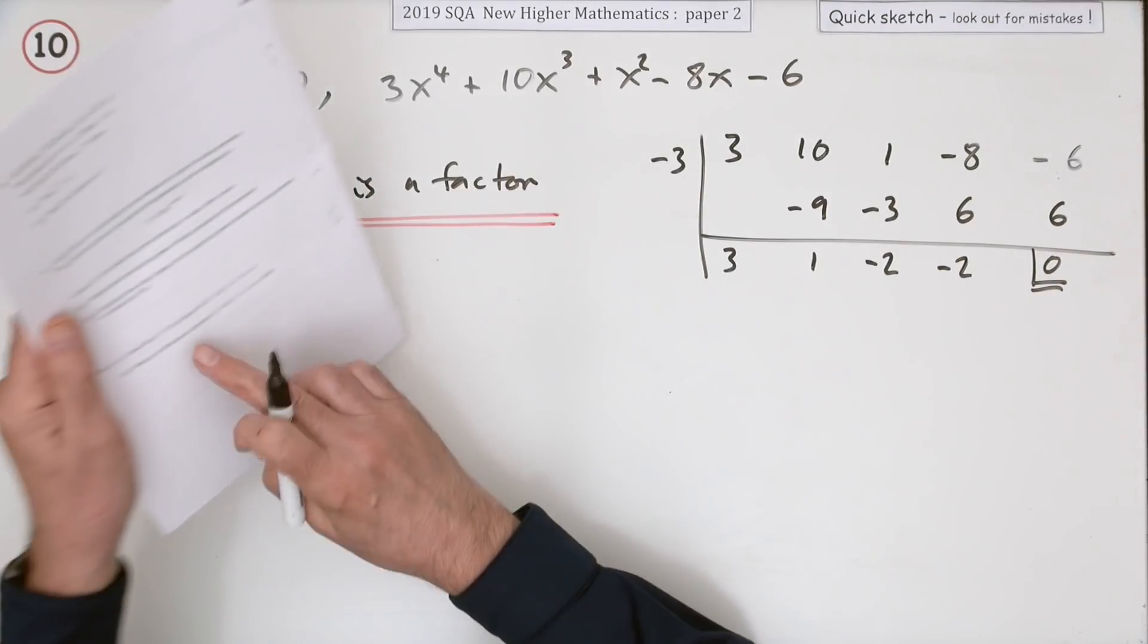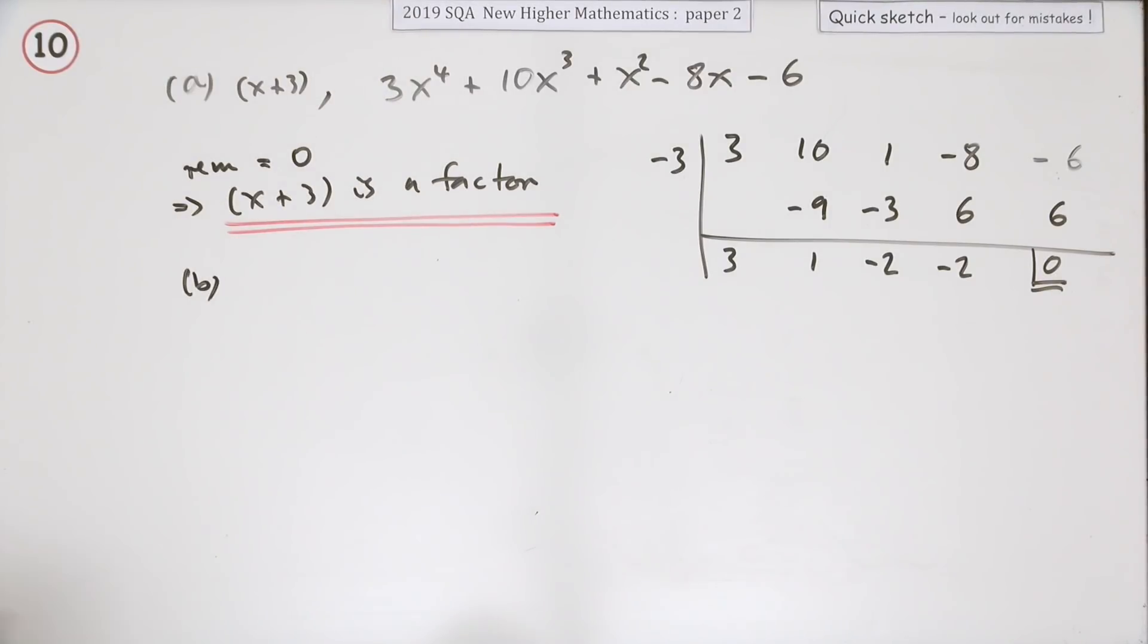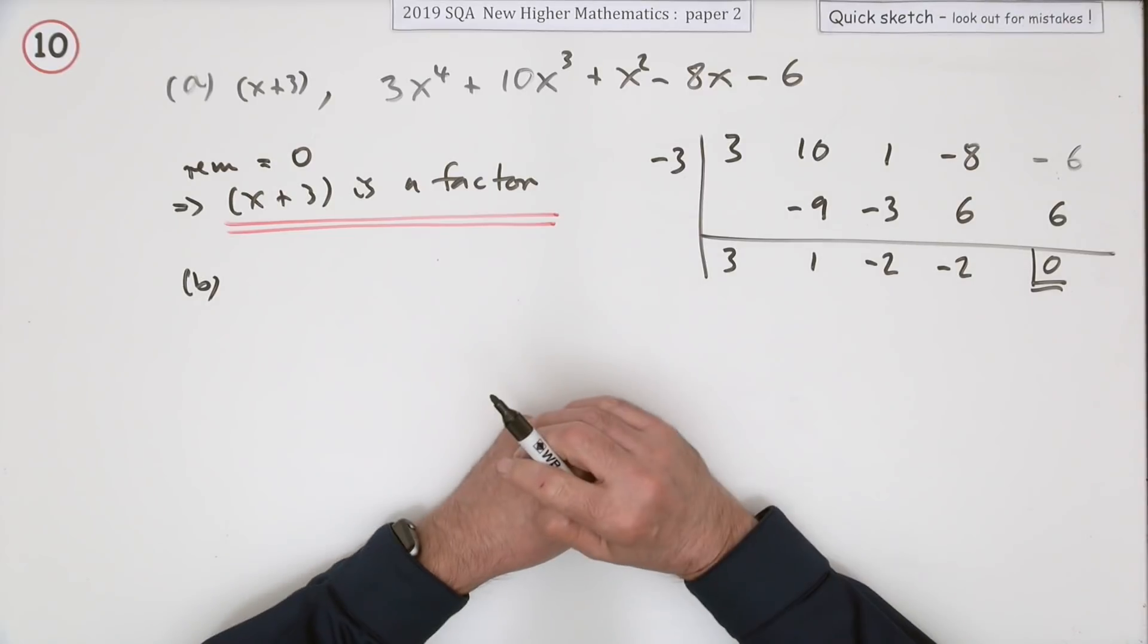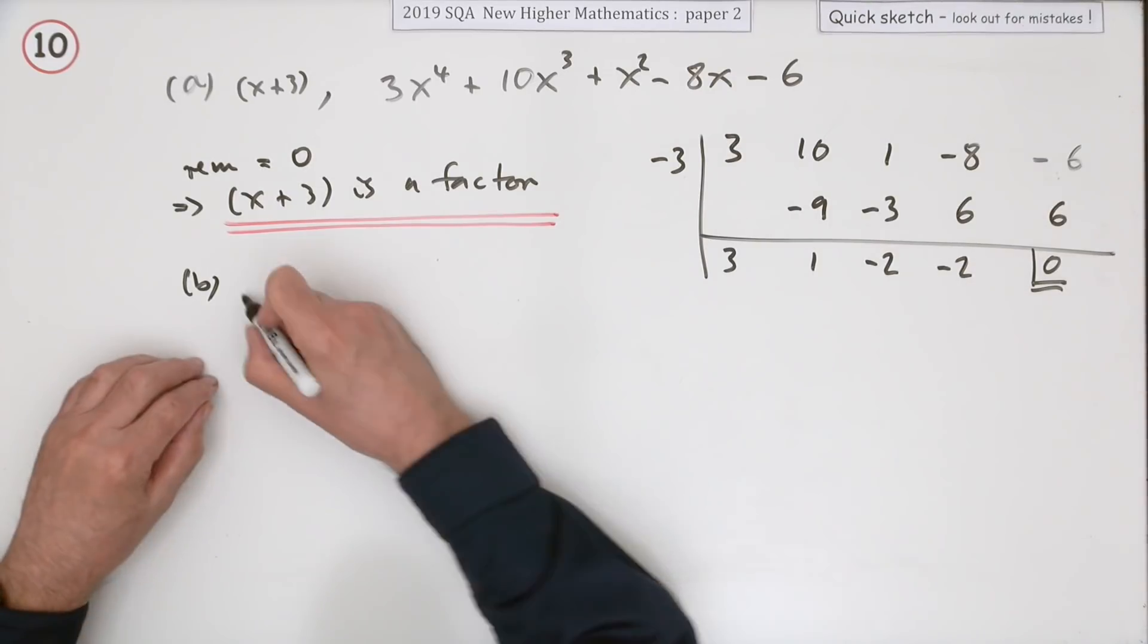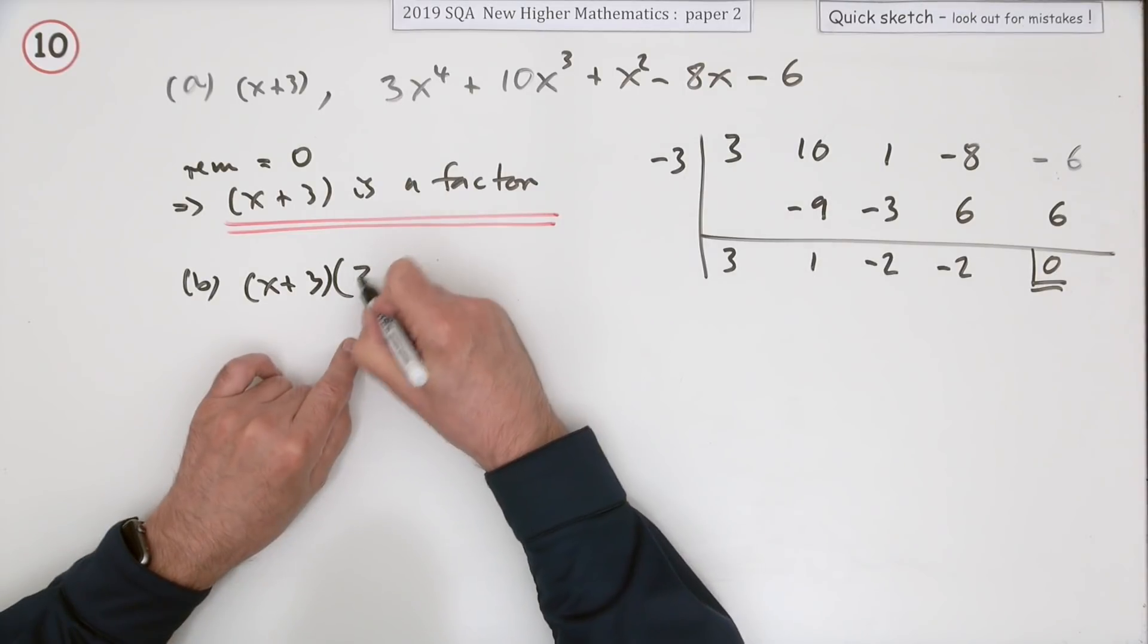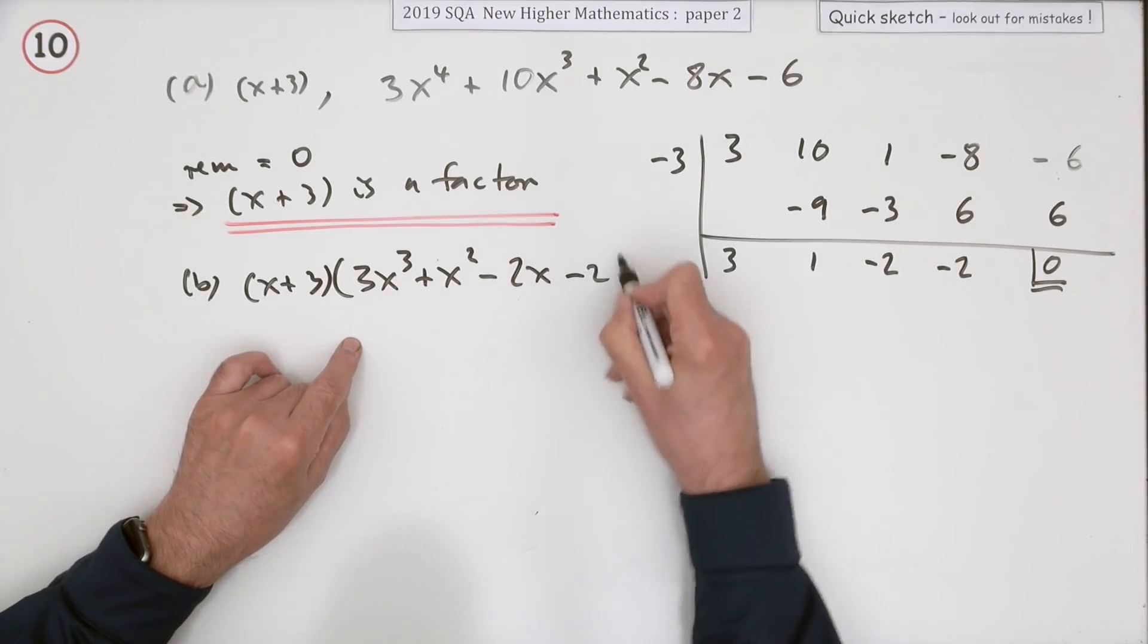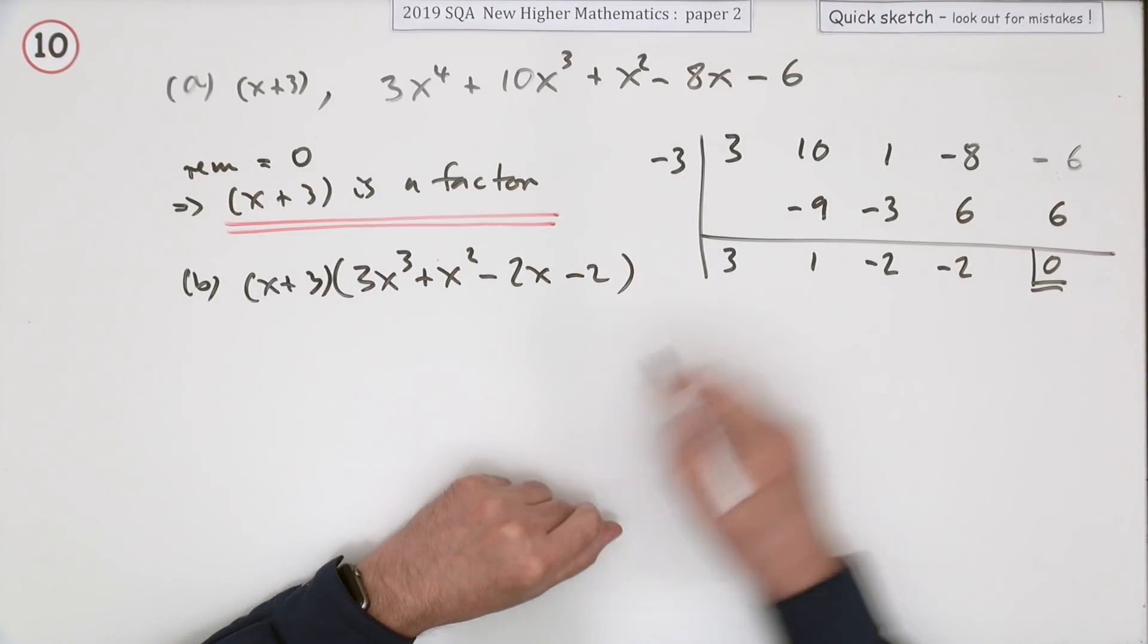Part b was hence or otherwise factorize it fully. Normally you would have had just a quadratic left and you're quite happy factorizing quadratics. This will still be a cubic. That becomes (x+3) times—if I was to write that out properly it'd be 3x³+x²-2x-2. That's what I've got so far. Now you've got to factorize this.